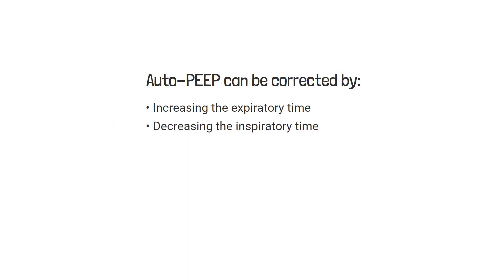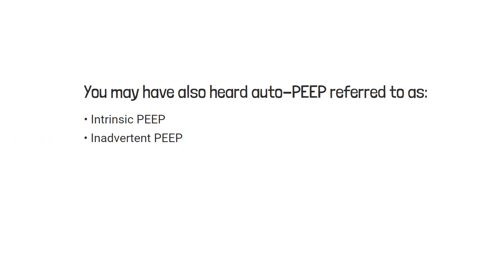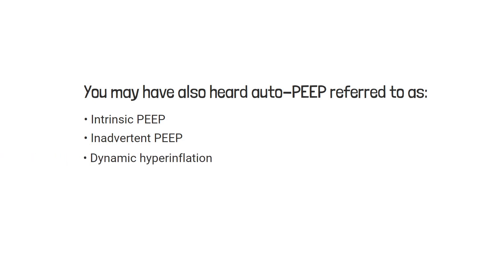Auto-PEEP can be corrected by increasing the expiratory time, decreasing the inspiratory time, or by increasing the flow. Other than air trapping and breath stacking, you may have also heard auto-PEEP referred to as intrinsic PEEP, inadvertent PEEP, or dynamic hyperinflation.